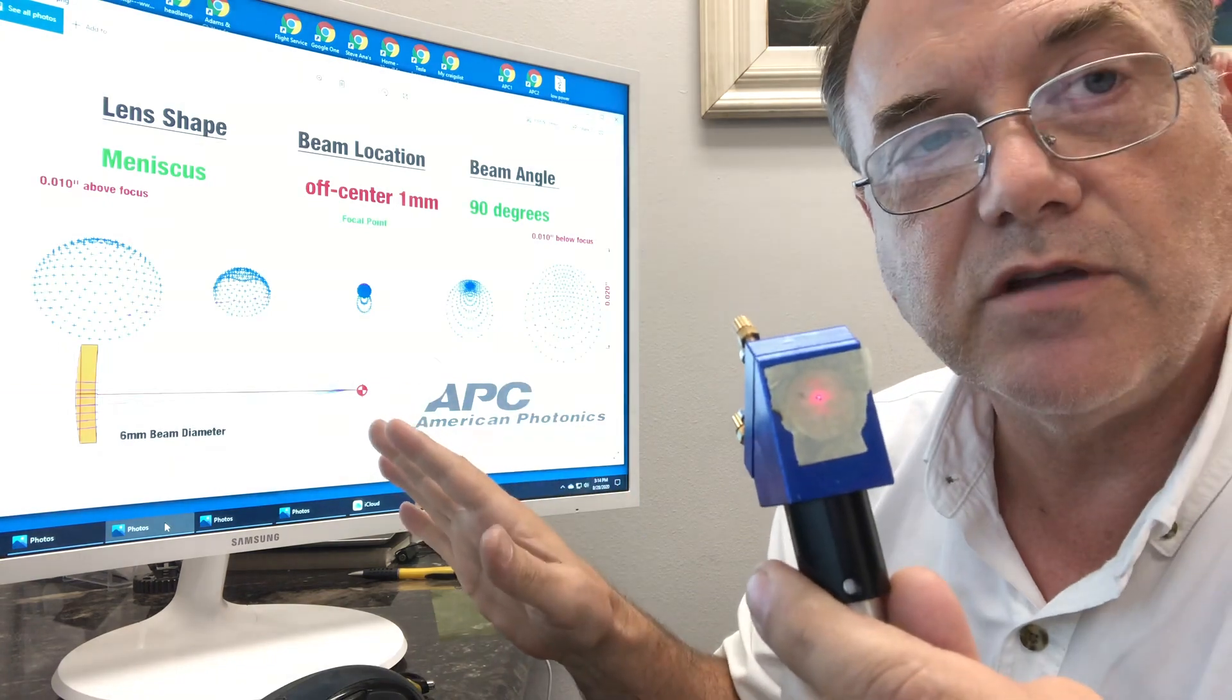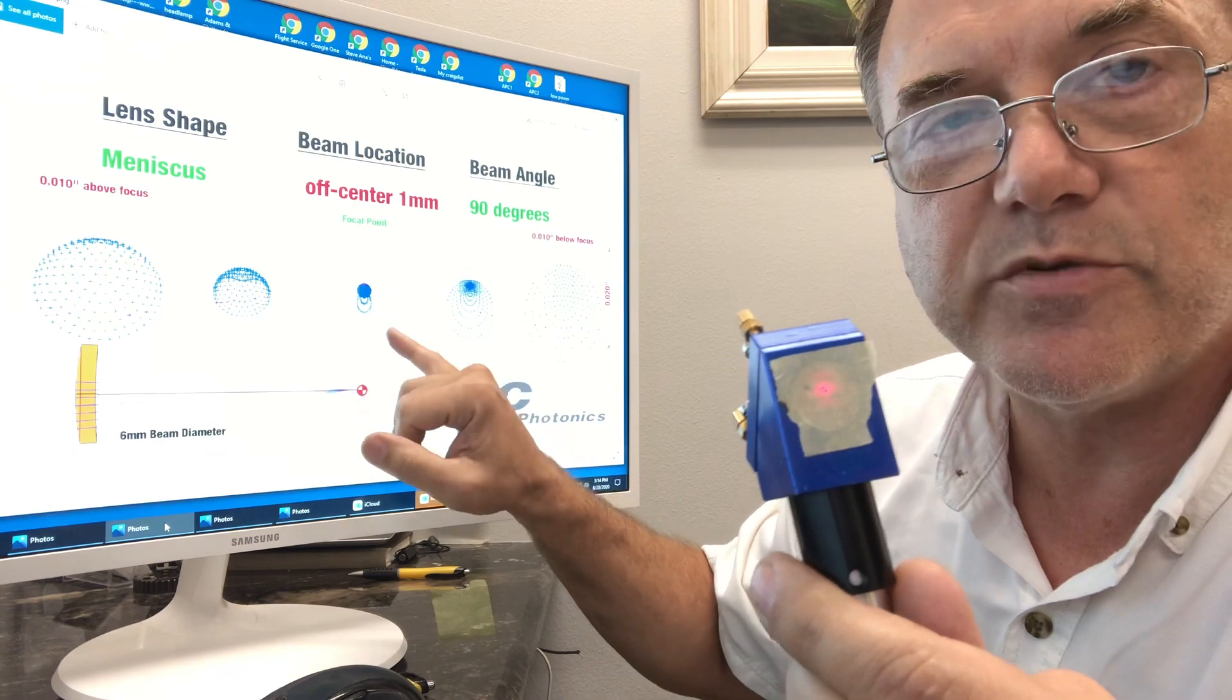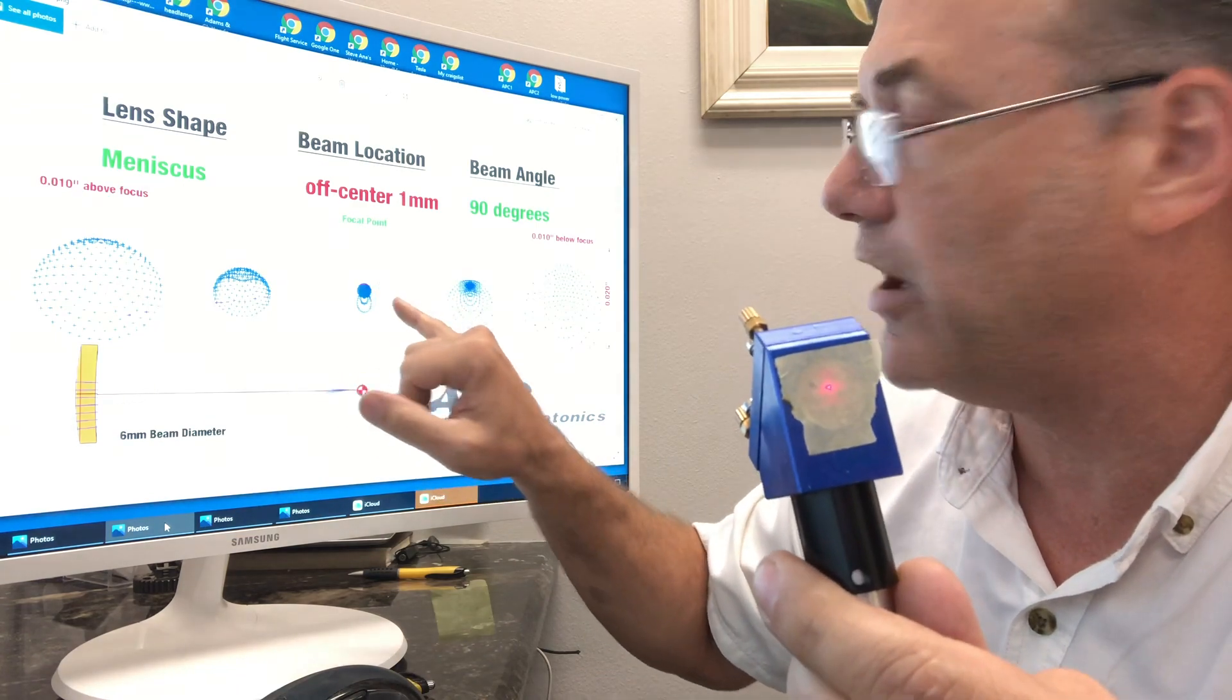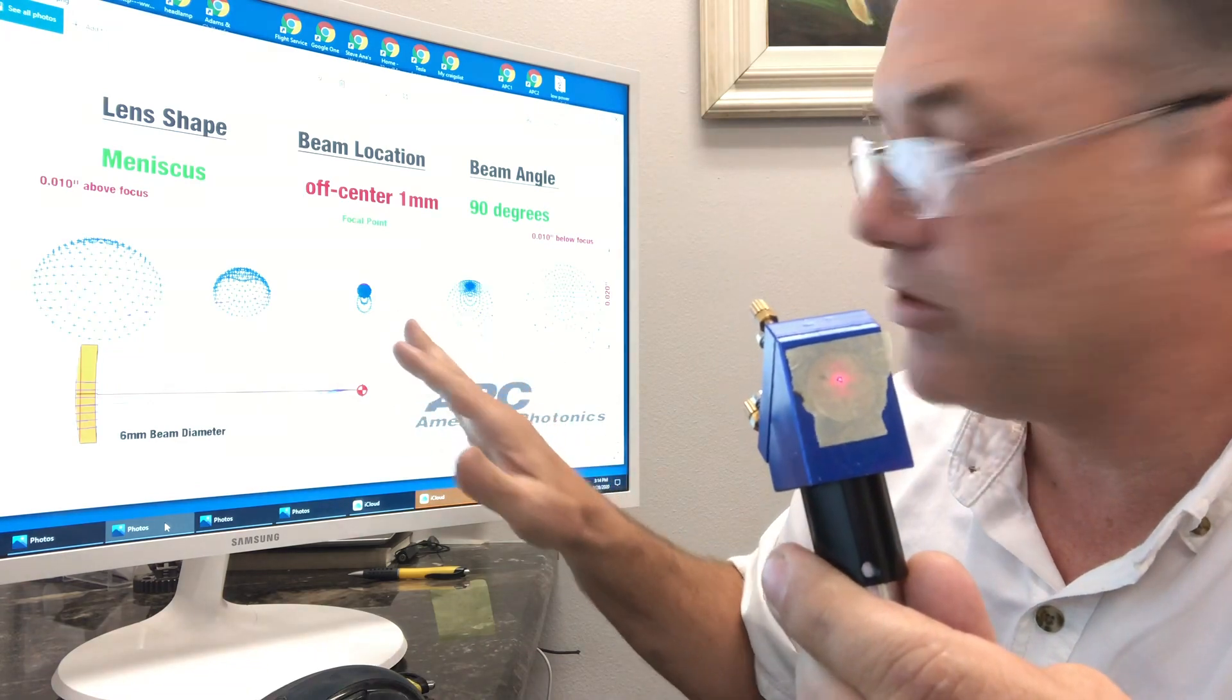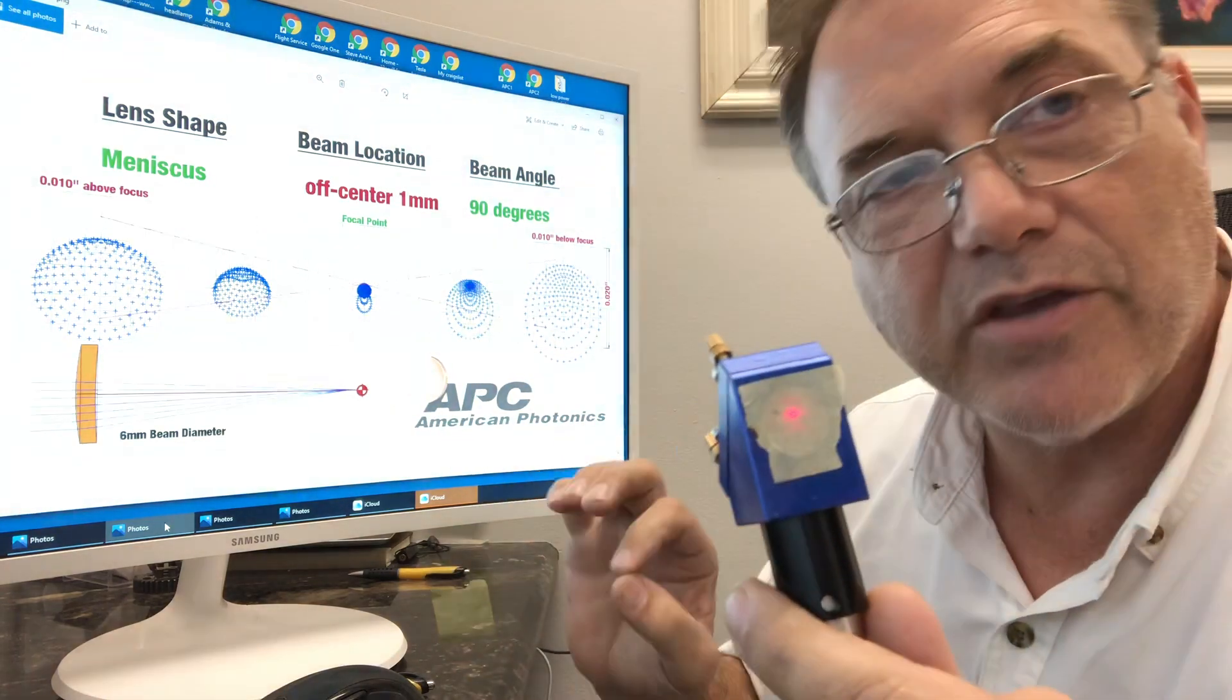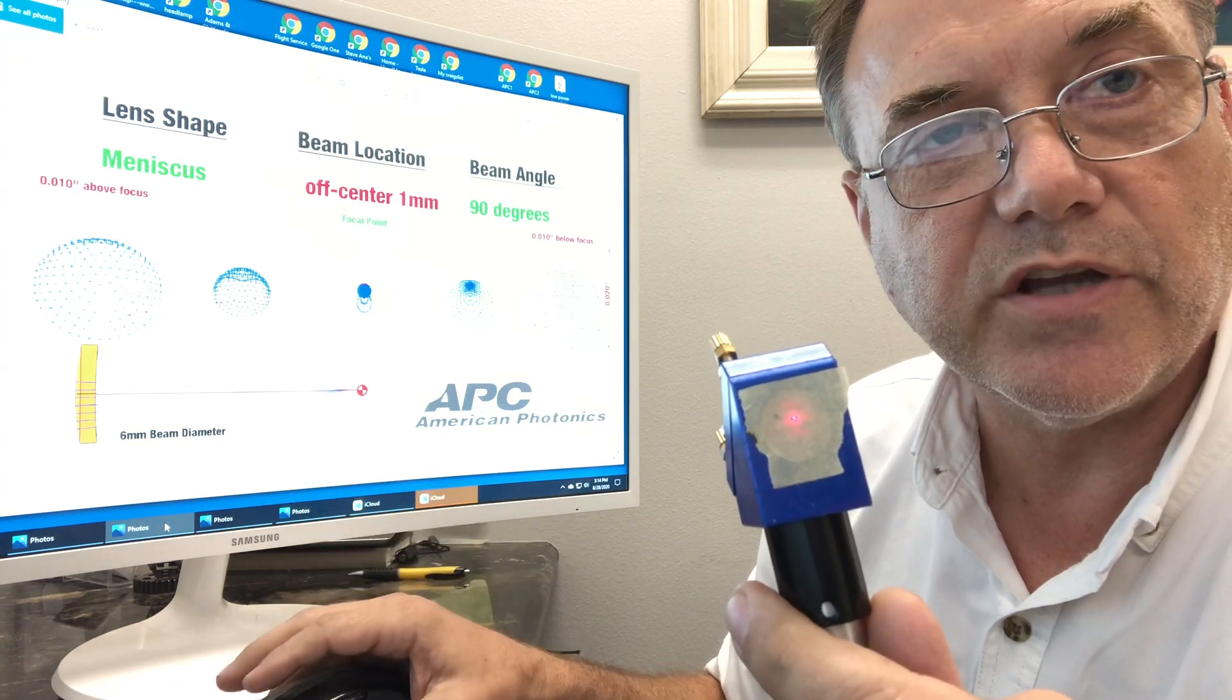It cuts. It works. You have a nice high energy. It's going to cut through because you still have probably 95% of your energy in a single spot. Really, really nice. But you're not going to have the best quality you could get, and that is what we all want out of our machines.